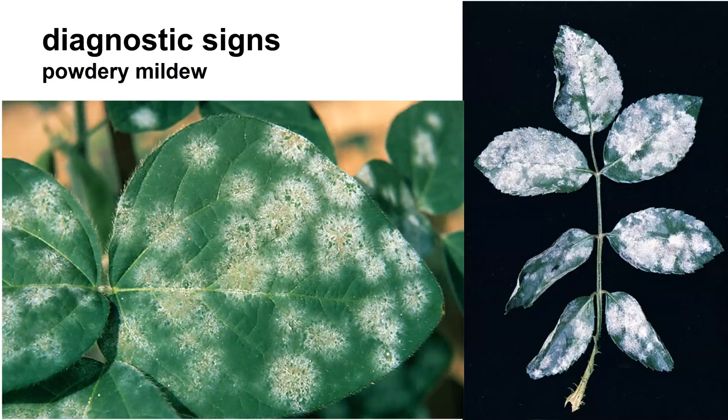This is powdery mildew. These are diagnostic signs, meaning that you could actually identify this from them. The one on the left hand side is on crepe myrtle; the one on the right hand side is on rosebush. You often see this on turf grass as well — it will be on many different hosts. It likes high humidity but not free moisture, and it's very common during the summertime.